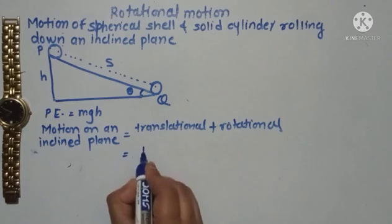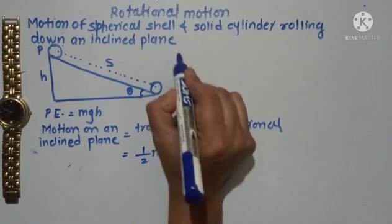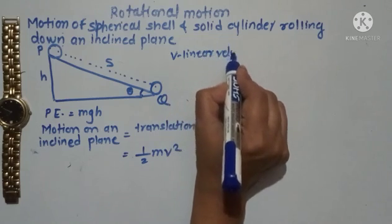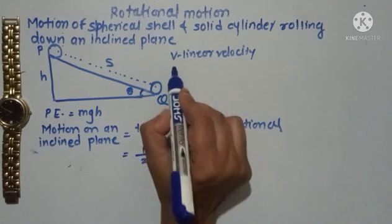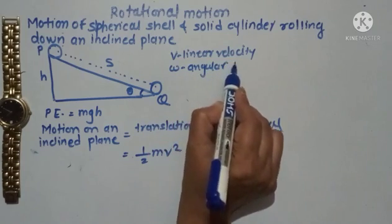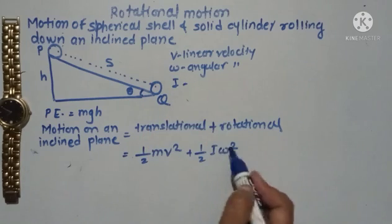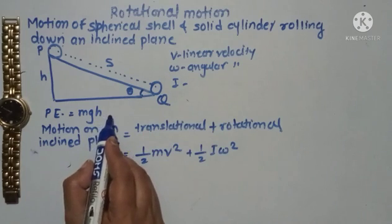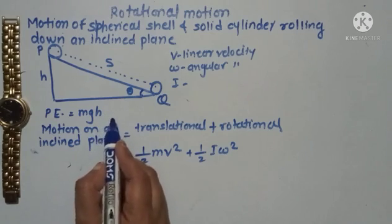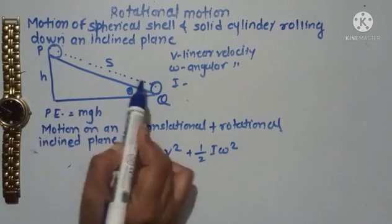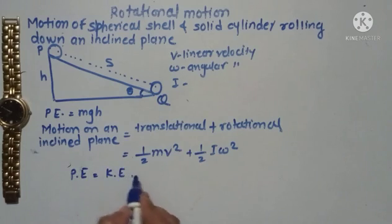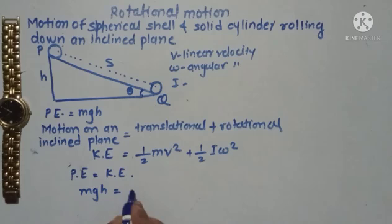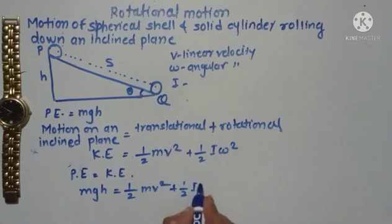The translational kinetic energy is given by one-half Mv², where V is the linear velocity. The rotational kinetic energy is given by one-half Iω², where I is the moment of inertia and ω is the angular velocity. By the law of conservation of energy, potential energy is converted into kinetic energy. Therefore, MgH equals one-half Mv² plus one-half Iω².